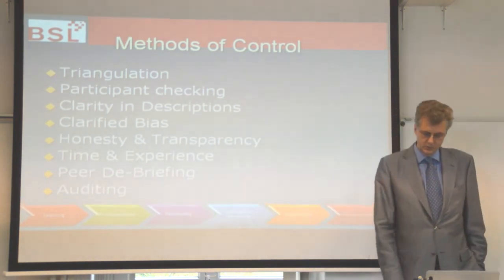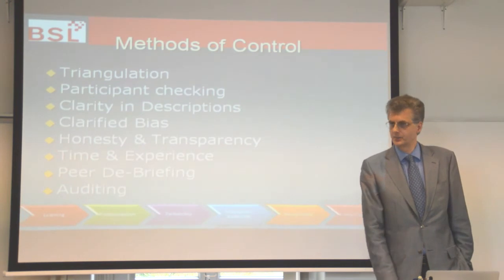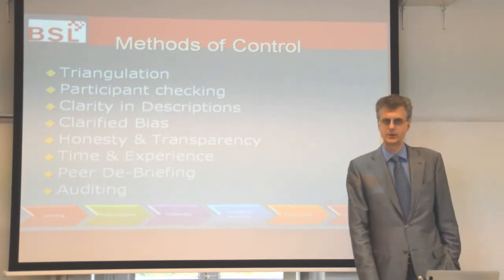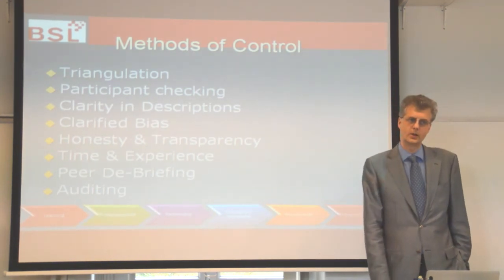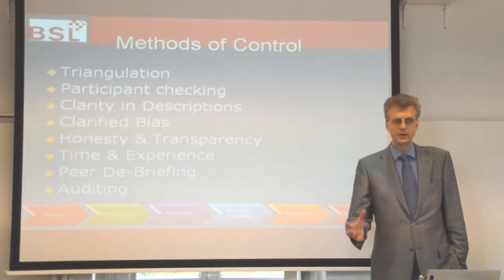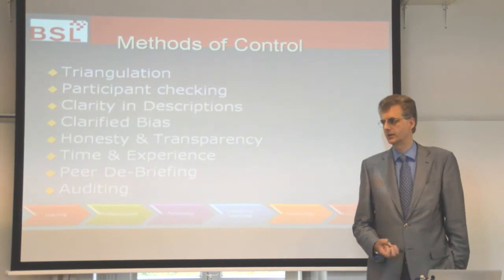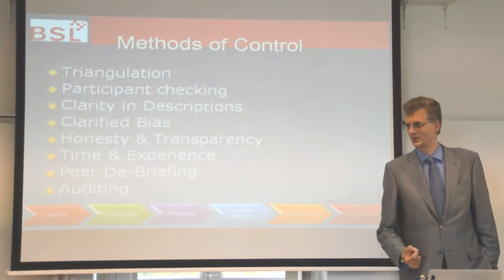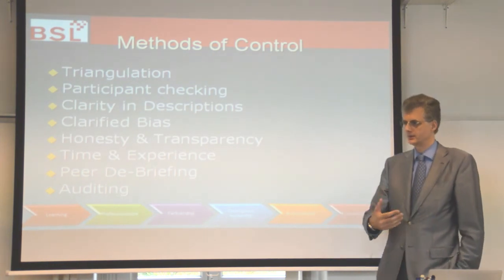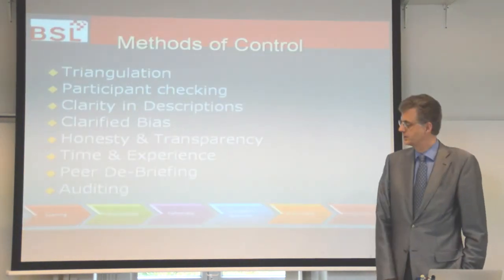Auditing is another method of quality control, where you get other people to act as neutral auditors — much like auditing a business's financial accounts. They do a background check on your sources and where you get your information. It is rarely done in normal academic research because it is so heavy and costly. But if you can form a team — if three of you agree to audit each other's writing, make the commitment, and take the time — it would be fantastic. You would have two other students checking each person's paper, doing background searches on the authors your colleagues used, and helping each other out.